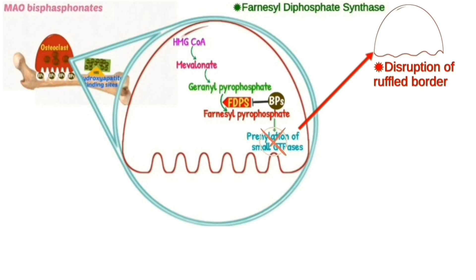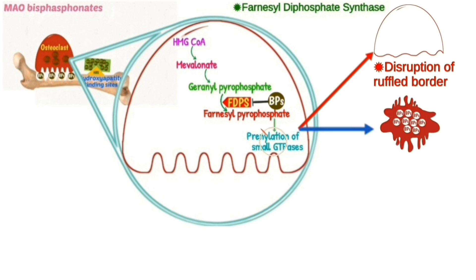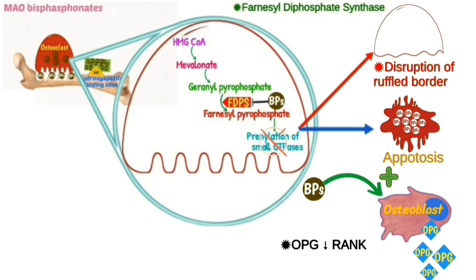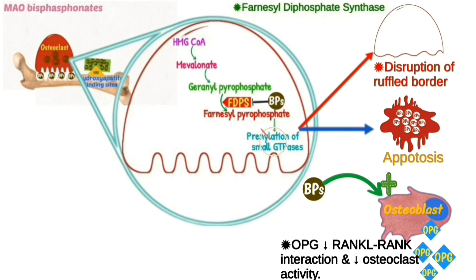Disruption of the ruffled border may lead to inhibition of osteoclast attachment to bone. Accumulation of bisphosphonate in osteoclasts induces apoptosis. Bisphosphonates also have a positive effect on osteoblasts, causing release of OPG. OPG decreases RANKL interaction and decreases osteoclast activity.